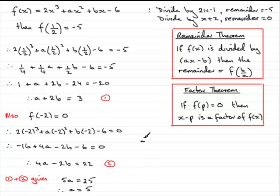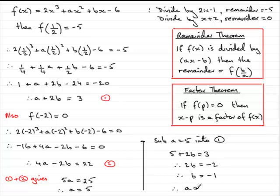So all I need to do now is simply substitute a equals 5 into either equation 1 or 2. I'm going to pick equation 1. We've got 5 plus 2b equals 3. If I subtract 5 from both sides, I get 2b equals 3 minus 5, which is minus 2. And then divide both sides by 2, and you end up with b equaling minus 1. So we have a equals 5 and b equals minus 1. I hope you've been able to follow that, and that brings us to the end of this part of the question.